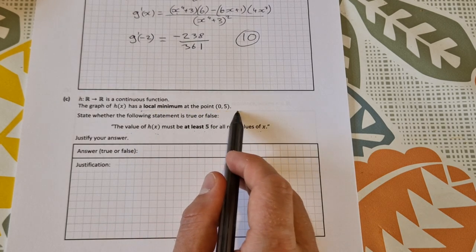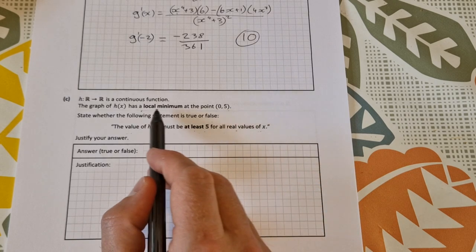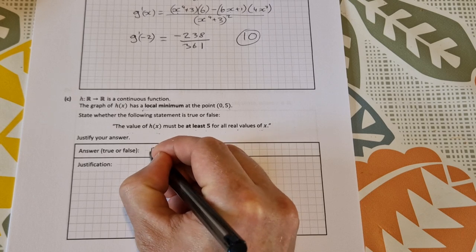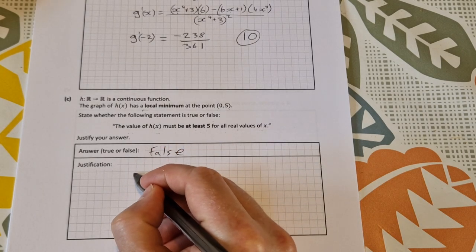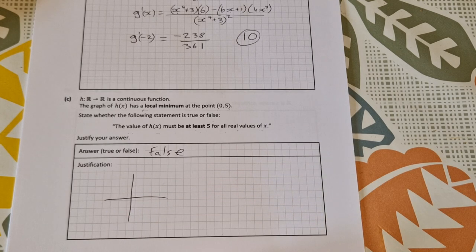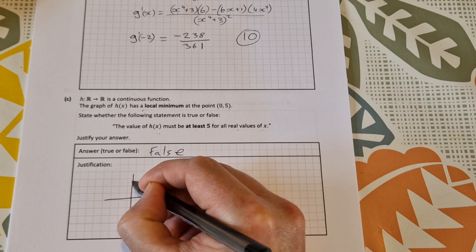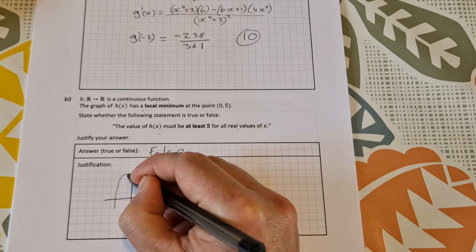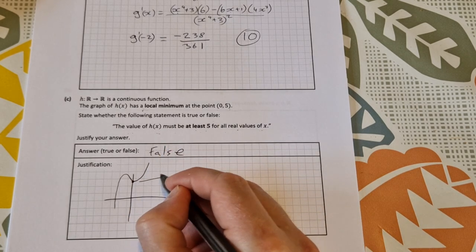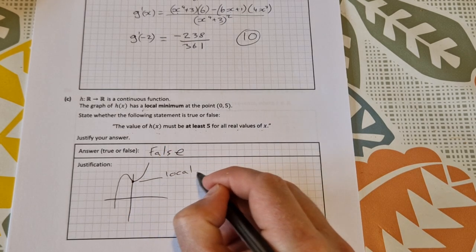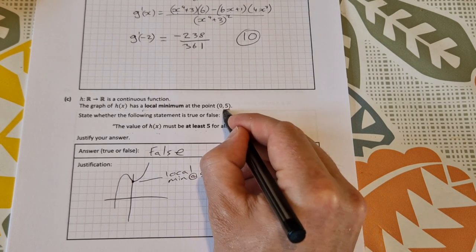We can just draw a little graph to show this. If we draw a little cubic function where we have a local minimum at 5, we can draw it in like this. There's our local minimum at 5, that's y = 5.